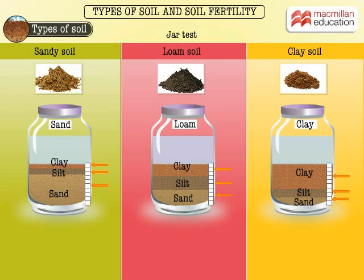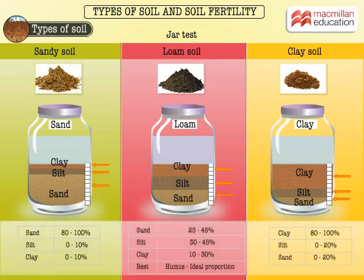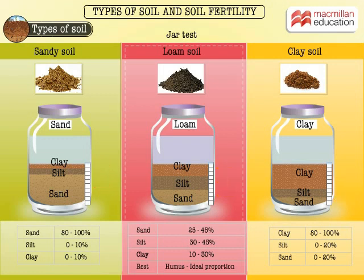Let's observe more closely the volume of each component in the three bottles. The percentage volume of each component is tabulated here. Loam has the ideal composition that is best suited for plant growth.